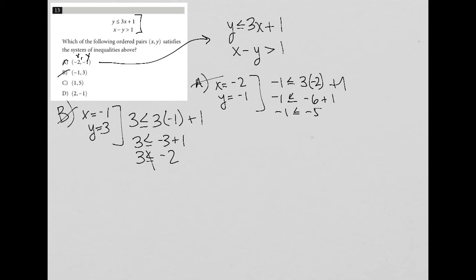Now I'm going to try C, where x equals 1 and y equals 5. I'm going to continue the same process. Instead of y, I have 5 is less than or equal to 3 times 1 plus 1, 5 is less than or equal to 4. That is also not true. So by default, D must be the right answer.